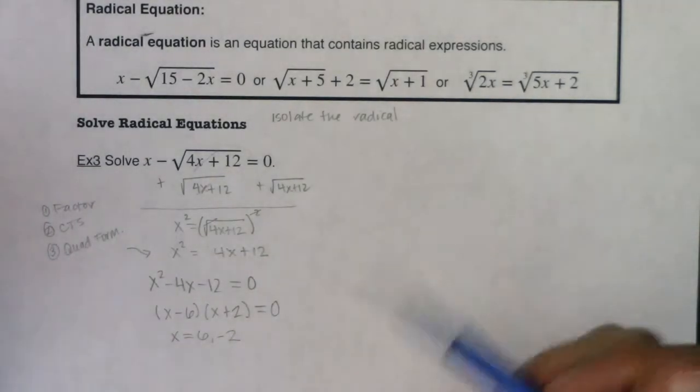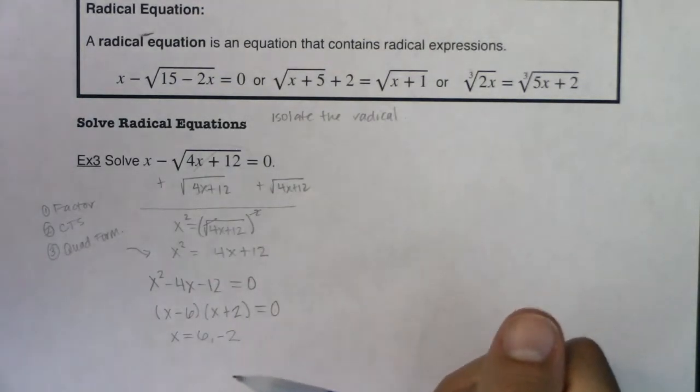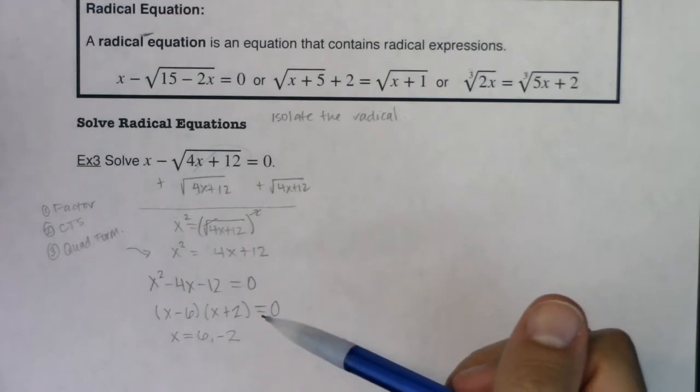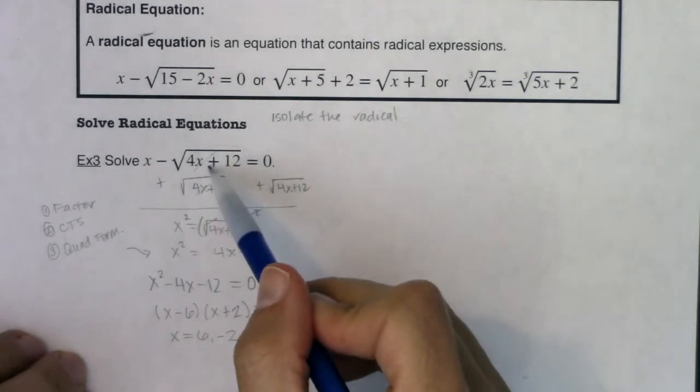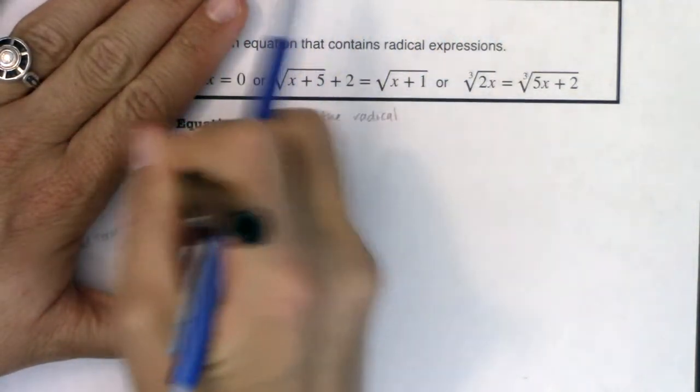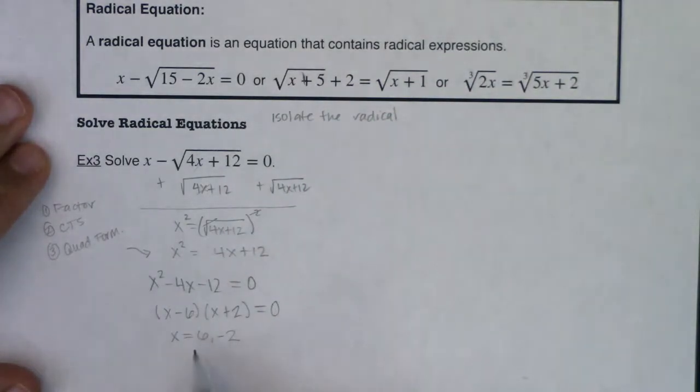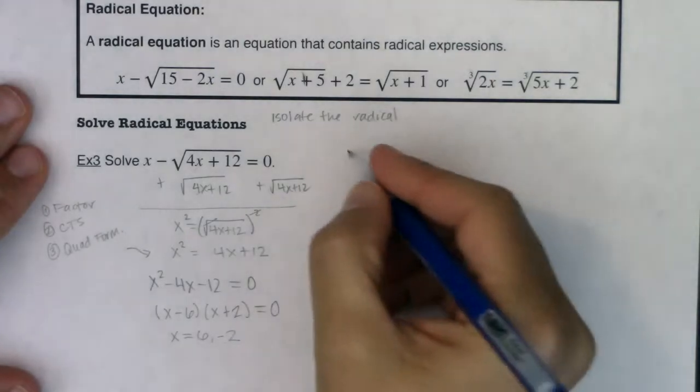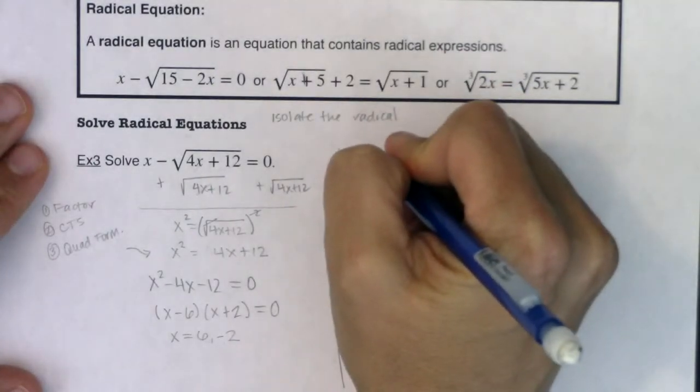And what typically happens when we're solving radical equations is we tend to get an extraneous solution. So an extra solution that exists, at least algebraically, once you work through it, but doesn't actually fit into the original problem. So let me show you what I mean by this. What this means is when you get your two answers at the end, it's very possible one of them doesn't actually work. So we're going to check these answers. Let's check these answers.